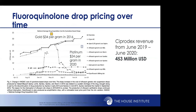A graph shows the price of Ciprodex or Cipro HC has doubled since 2012 despite no significant changes in research or effectiveness. For comparison, the price per milliliter of Ciprodex sits between the price of platinum and gold. Why is it so expensive? It continues to be a monopoly despite generics being available. Novartis, who produces Ciprodex, earned $450 million on that product in the last calendar year.